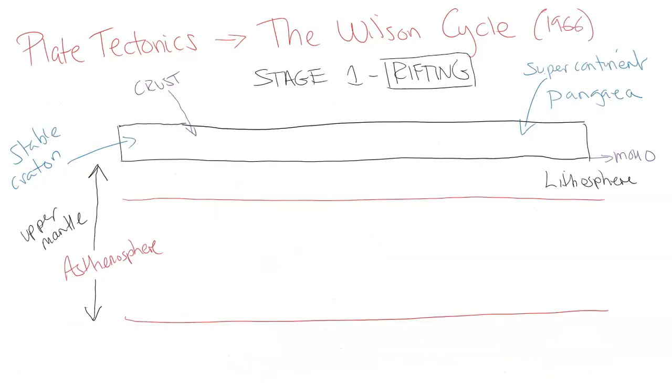The Wilson Cycle is basically a four-stage process. The first stage shown here is called rifting. Now rifting is the process of splitting or diverging or moving things apart. We start with this consistent solid connected craton, which is a very stable landmass that hasn't changed for a very long time.